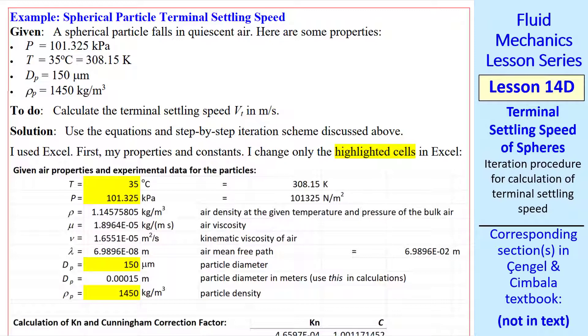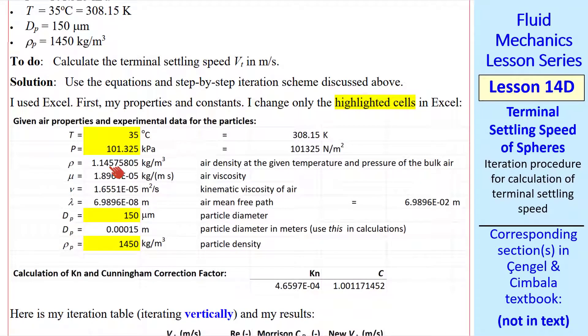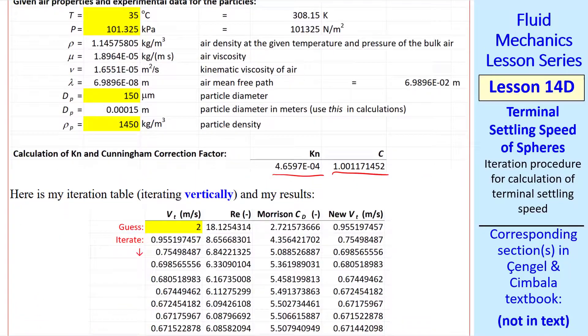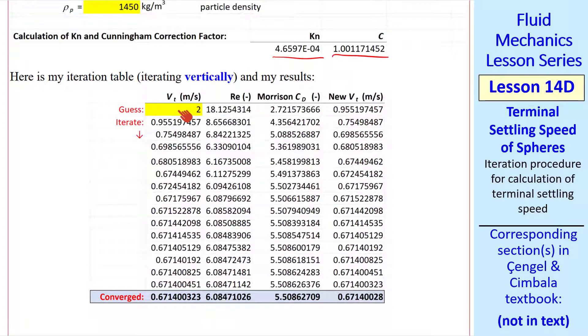You're welcome to use any software you wish. I got in the habit of changing only highlighted cells in Excel. The cells that are not highlighted have equations embedded into them. So I can set this up with any temperature, pressure, diameter, and density of the particle. Everything else is calculated. I calculate my Knudsen number and my Cunningham correction factor. And then here's my iteration, as I described above. My initial guess was 2 meters per second. I got a Reynolds number, a drag coefficient from the Morrison equation, and a revised vt.